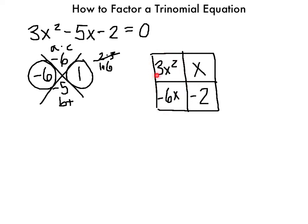What is the biggest number that divides into both 3 and 6? That's going to be 3. But you can't stop there — you have to look at the variables as well. The value they share is x, and you take the smallest exponent, which is 1. So 3x goes on the top. X goes on the side, because these two factors have to multiply to give what's inside the box.